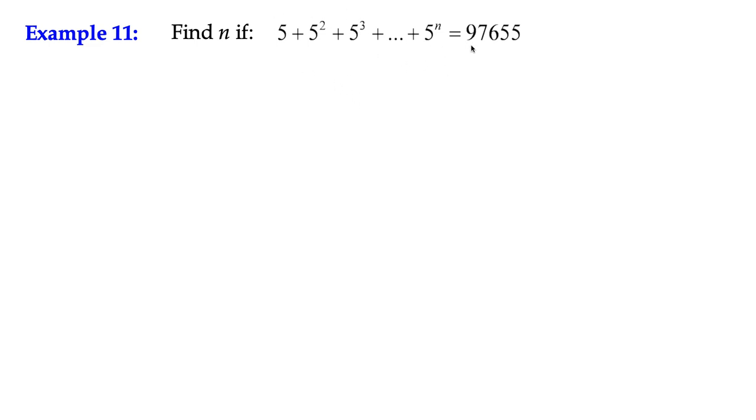We're told that the sum of this series is 97,655. So what's n? How many terms do we have in that series?